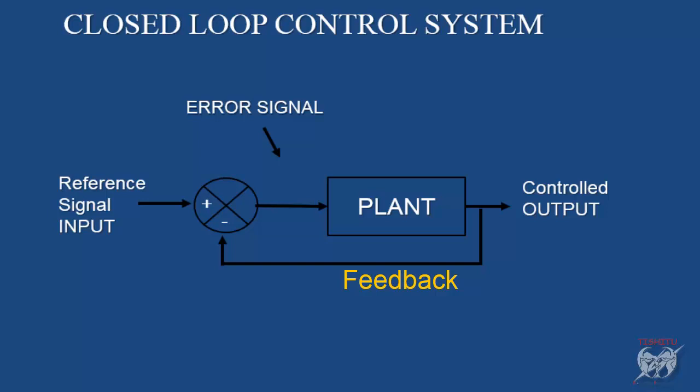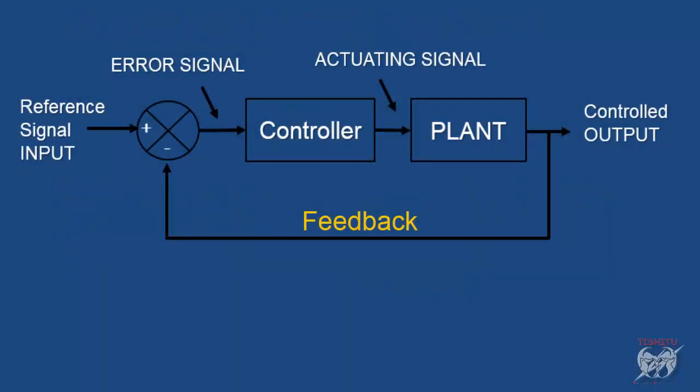So our target is that we want error get zero. For this purpose we use controller before plant like this. A controller work in different different form and help system to get this error zero in proper manner. Output of controller is known as actuating signal. Today we talk about PID controller.